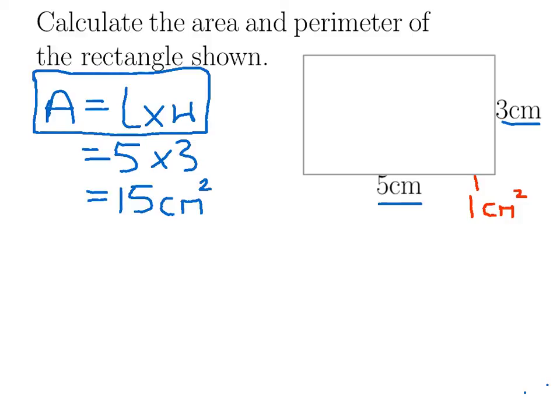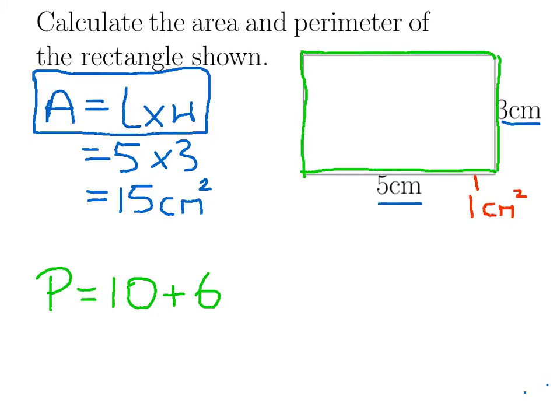So all we're going to need to do is add up all of our lengths and widths. So we have two lots of 5cm here and here, which gives us 10. And then we've got two lots of the width. So two lots of 3cm, which gives us 6 as well. And we must add those together. And that will give us a perimeter of 16cm.